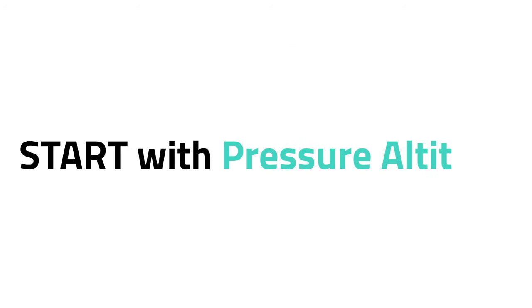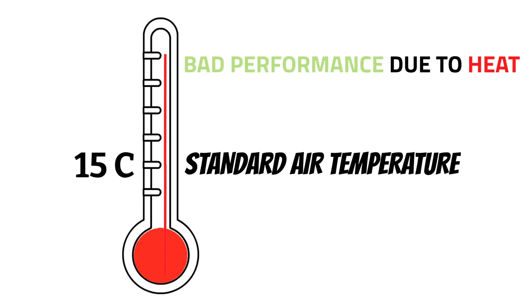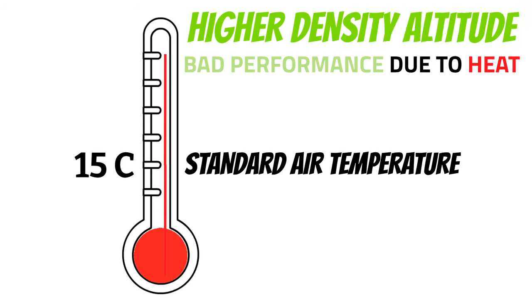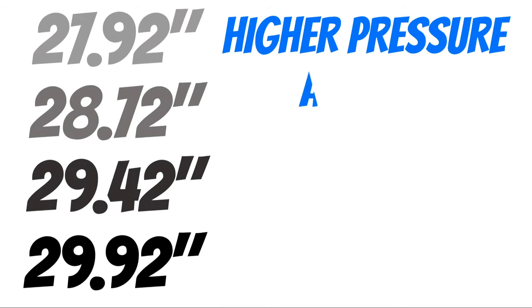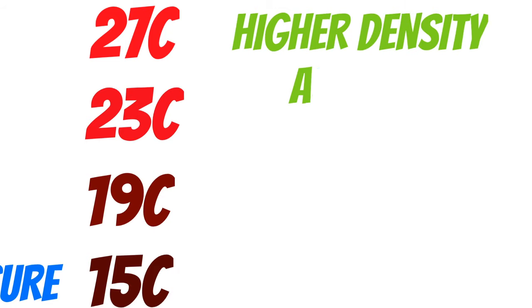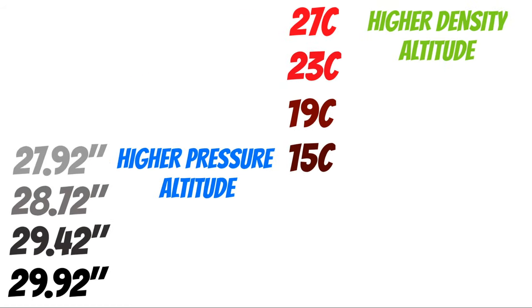Because temperature can affect our performance just like pressure altitude, we want to take that into account when we calculate performance. We start with our pressure altitude — that's always the starting point. If the temperature is standard, which is 15 degrees Celsius, you're typically going to get the best performance. But if it's hotter than that, your pressure altitude may stay the same, but your airplane thinks it's at a higher altitude because there's less air pressure. While your actual altitude may not have changed, your airplane's performance is going to get worse because it's at a higher density altitude. Density altitude is the altitude your airplane thinks it's at.